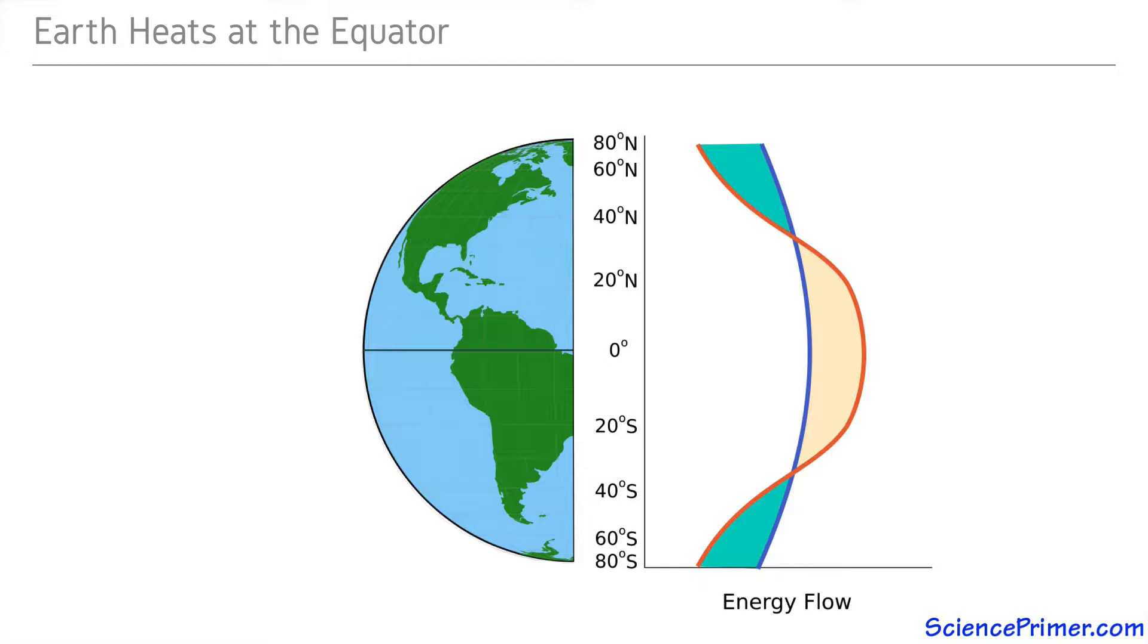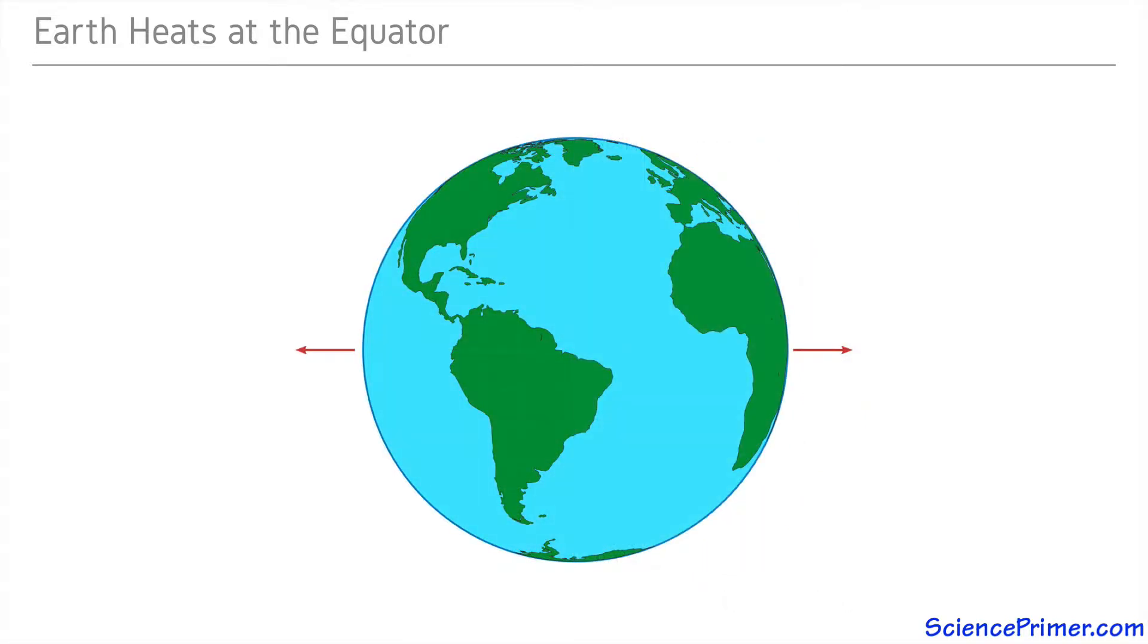Another factor is that more solar energy reaches the Earth at the equator than at either pole. The latitudinal variation in heating combined with heating from below creates conditions for convection cells to form.